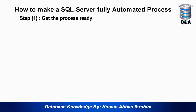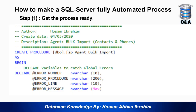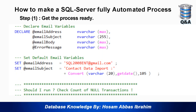Now the data transfer package and stored procedure are ready from the previous time. We have to wrap them in a new stored procedure which will control the main process. It is a very simple stored procedure — as you can see on screen, we create it and call it sp_agent_bulk_import. As usual, we declare the errors, and here we declare some variables to send an email after the process is done: email address, email subject, email body, and the error message.